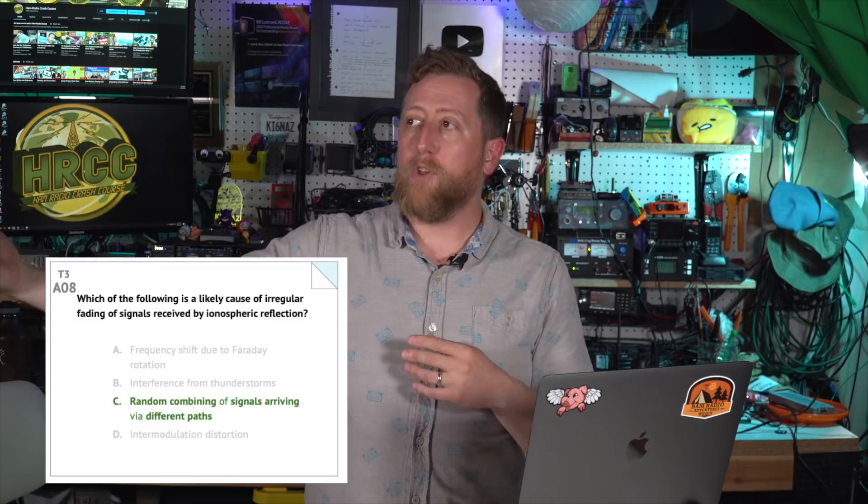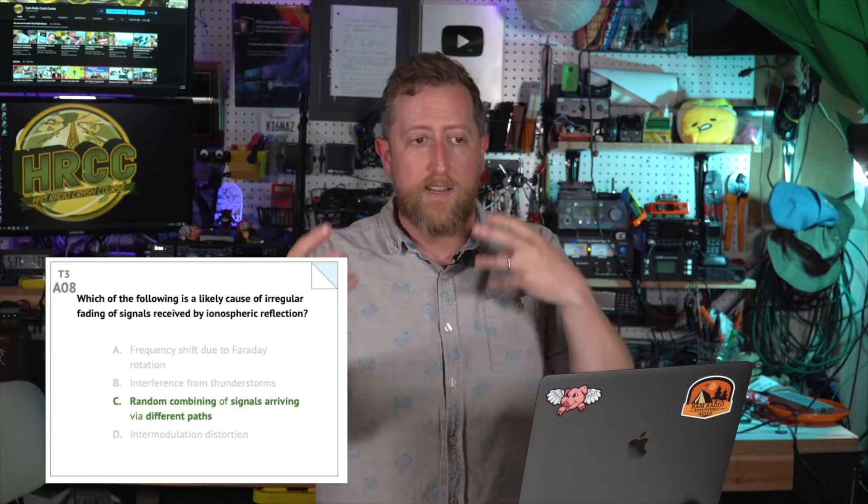T3A08: Which of the following is a likely cause of irregular fading of signals received by ionospheric reflection? Now we're talking about RF hitting the ionosphere — unlike VHF/UHF which punches right through, HF signals actually reflect back down via the ionosphere. The answer is C — random combining of signals arriving via different paths. You have people transmitting on the same frequency coming in from different propagation paths, combining together — that's what causes the distortion and garbled signal.